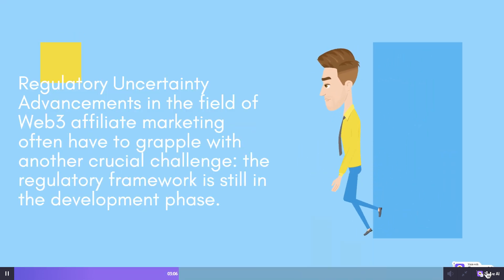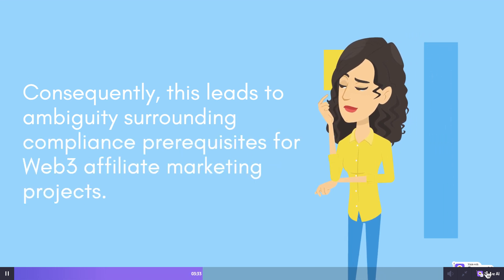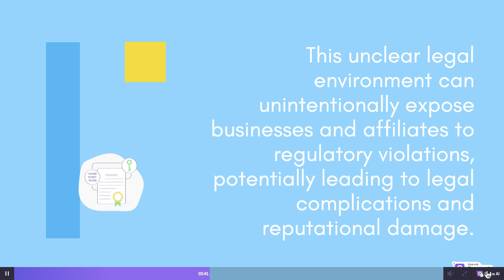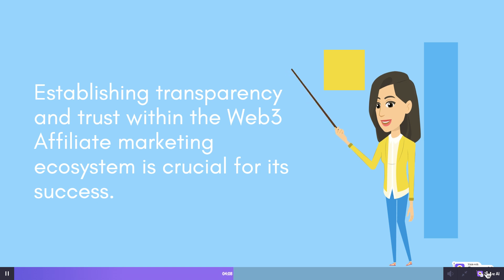Regulatory Uncertainty. Advancements in Web3 Affiliate Marketing often have to grapple with another crucial challenge: the regulatory framework is still in the development phase. Global regulators are in the process of crafting regulations to effectively govern cryptocurrencies, decentralized finance (DeFi), and blockchain technology. Consequently, this leads to ambiguity surrounding compliance prerequisites for Web3 Affiliate Marketing projects. This unclear legal environment can expose businesses and affiliates to regulatory violations, potentially leading to legal complications and reputational damage. Affiliates may also face uncertainties regarding fair compensation and accurately monitoring their referral activities. Establishing transparency and trust within the Web3 Affiliate Marketing ecosystem is crucial for its success.